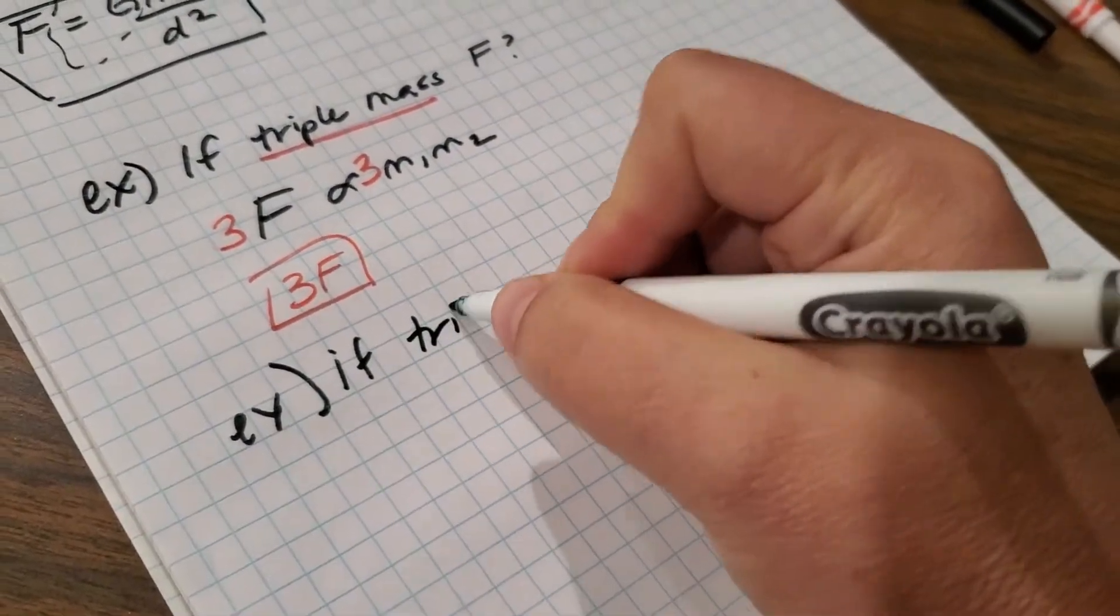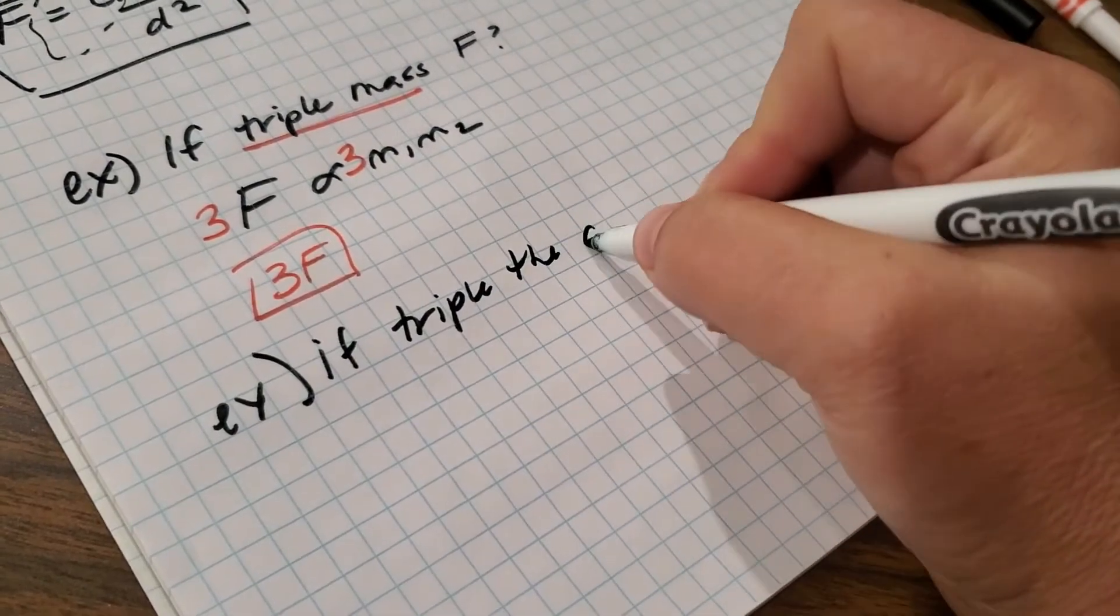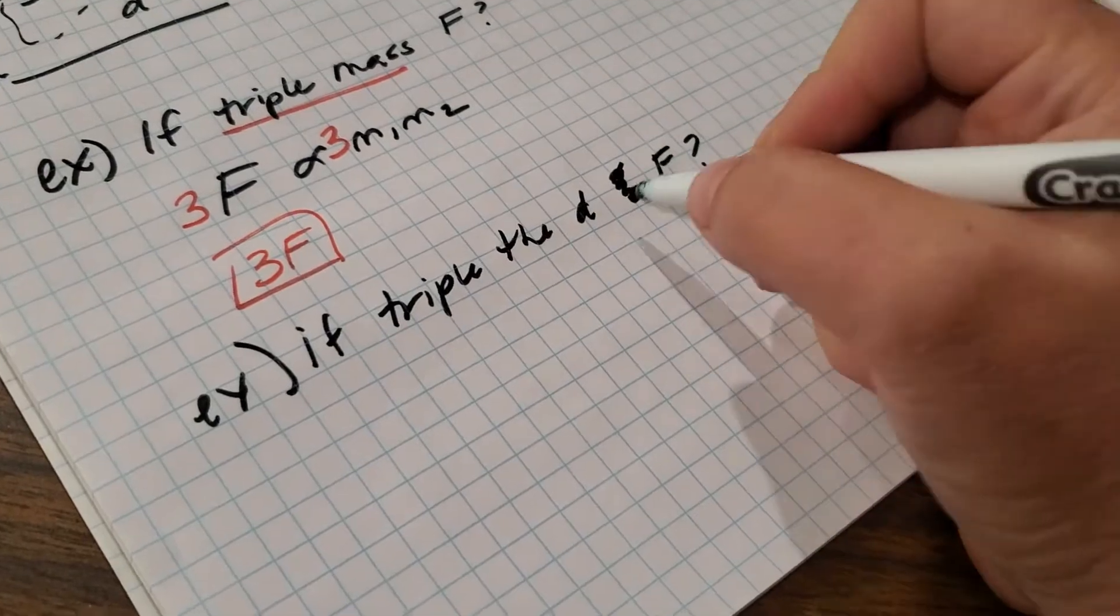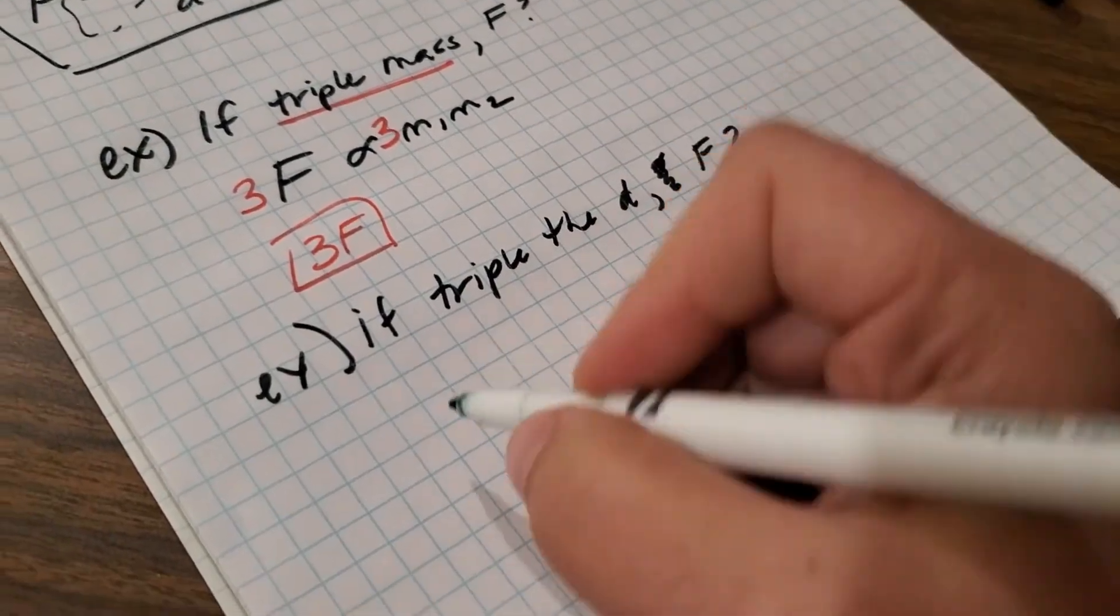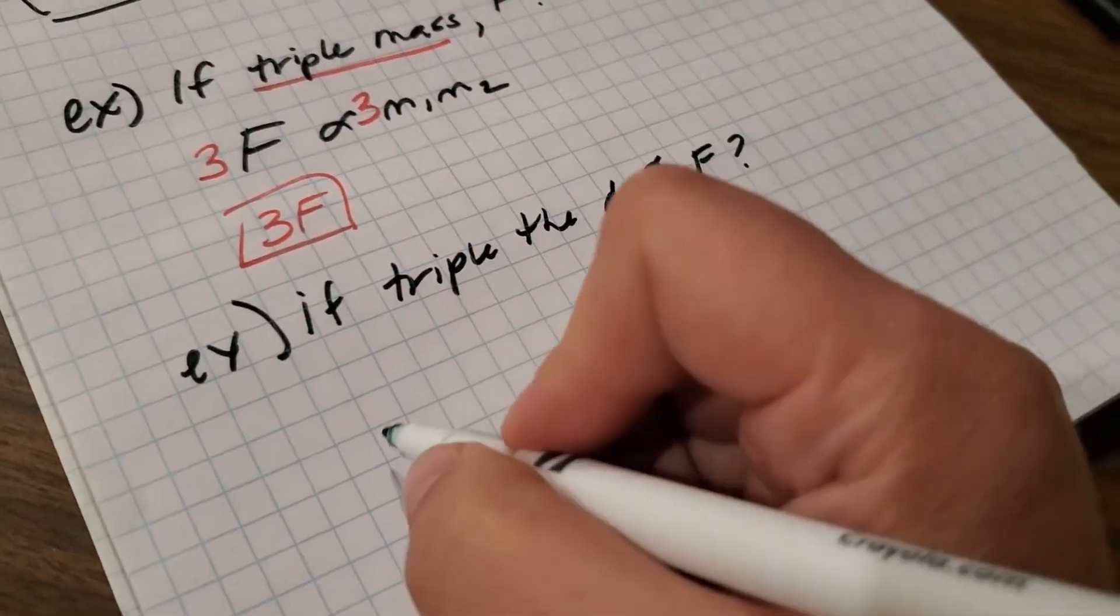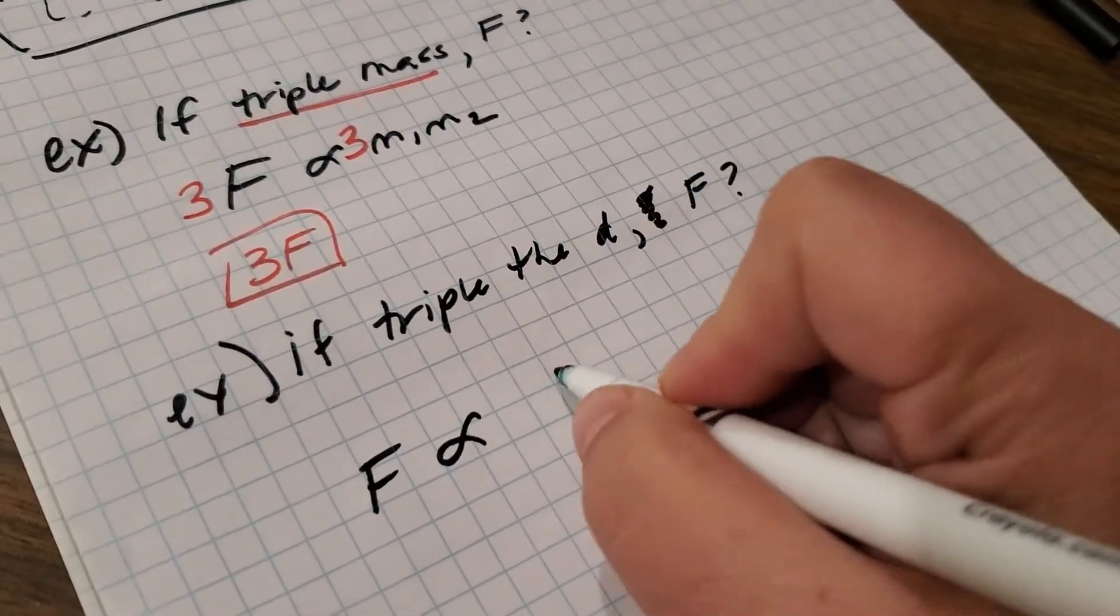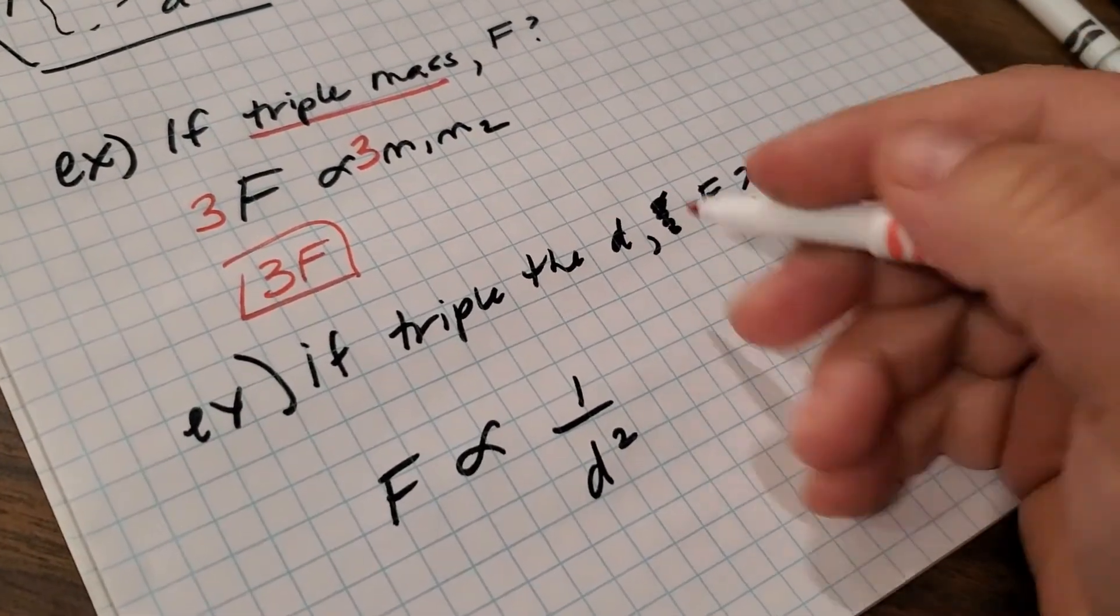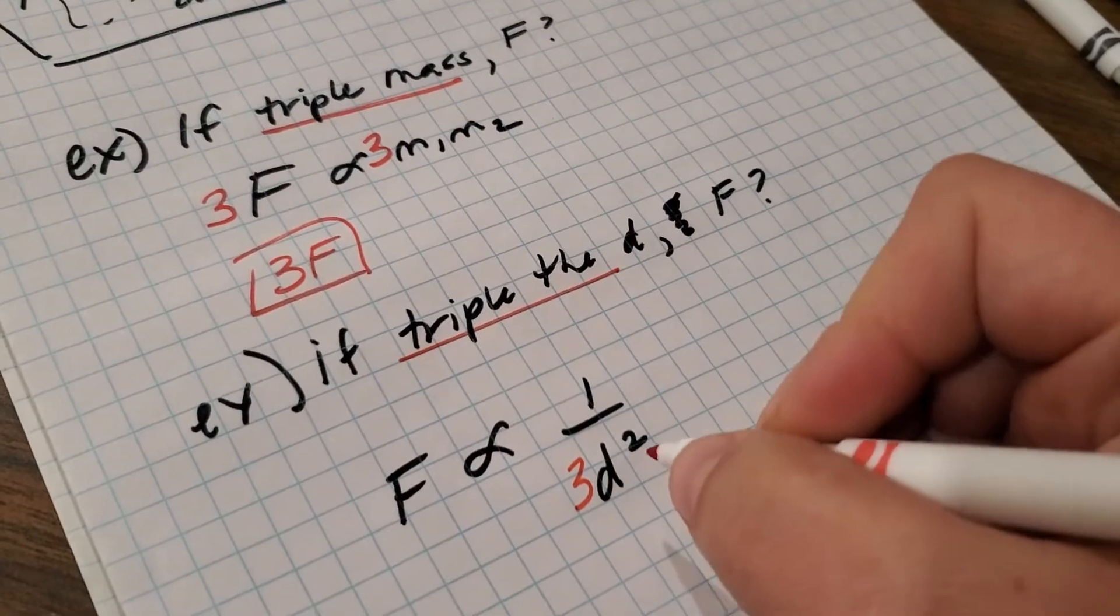Let's do triple the distance. What happens to the force? All right. So let's write the appropriate proportion. F is proportional to one over D squared. Now do whatever it says to do. It says triple the distance, so put a three here.